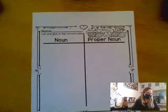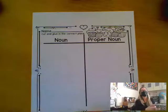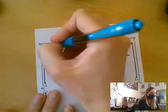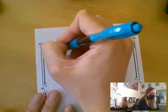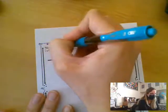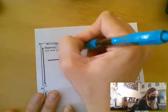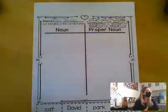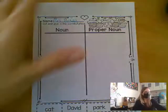So on this page, we're going to be doing a noun and proper noun sort. I'm going to put my name on my paper because the first thing I do is always the same — take out my pencil and write down my name. So there's my name. Now this is a cutting and gluing page, so I'm going to start by cutting off that bottom.